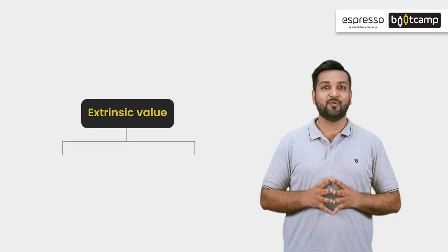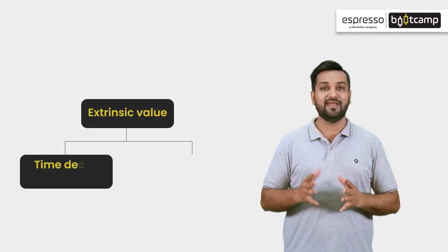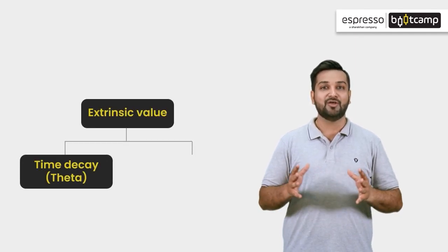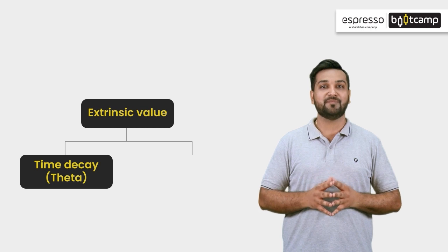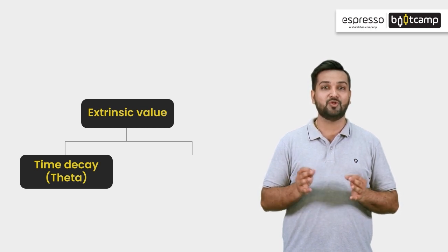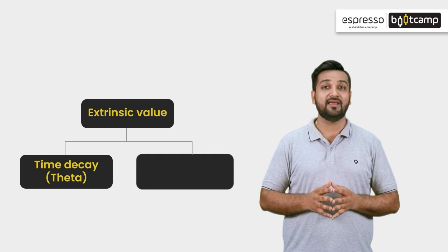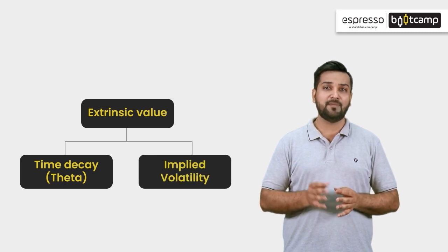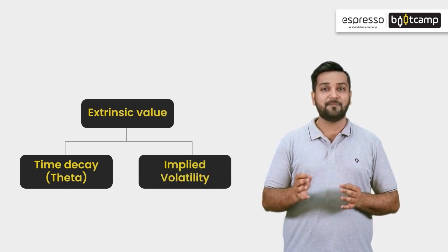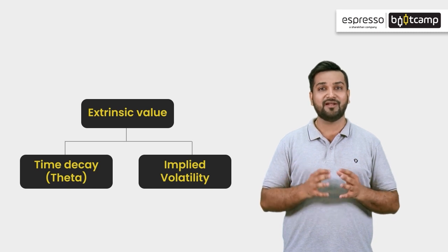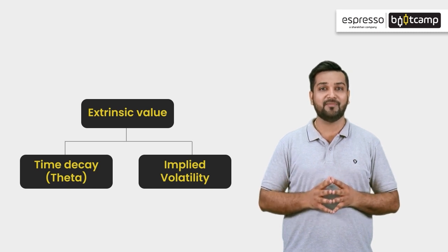In the last video, we covered time decay, which is a part of the extrinsic portion of the option premium. The second part of the extrinsic portion is implied volatility, and this is also an option Greek.